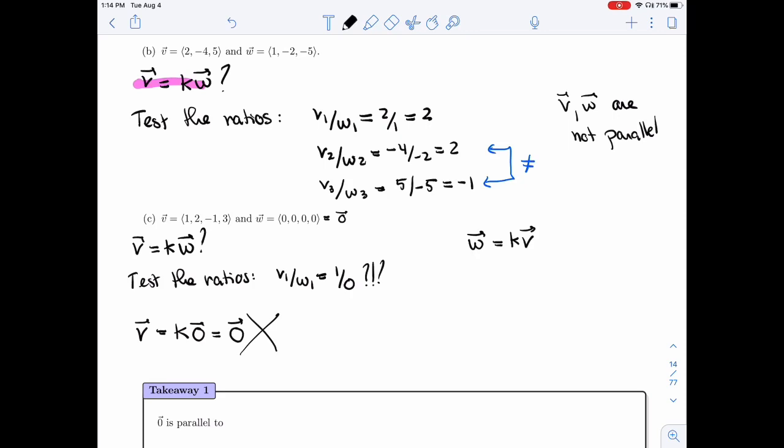Is it possible to write W as KV? In this case, we're testing the opposite ratios, if you want. And so is it possible to find a K so that the zero vector is KV?